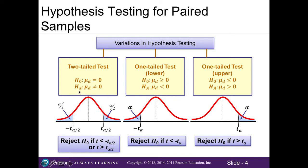The way the hypotheses are written here is that our population mean difference — mu sub d — is equal to zero or not equal to zero for the two-tailed test. For our one-tailed lower-tailed test, the population mean difference is less than zero, pointing to the left on our curve. For our one-tailed upper-tailed test, the population mean difference is greater than zero, pointing to the right.